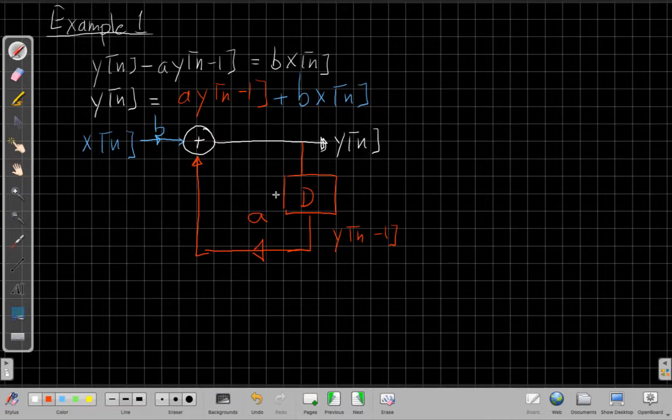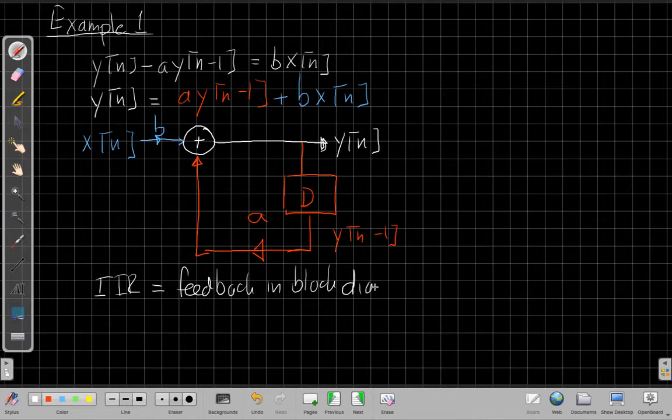Another good thing to point out about this figure, as we saw earlier in the example video, this is a recursive difference equation. So it leads to what we call an infinite impulse response. And this figure starts to show us why. It turns out that infinite impulse response is deeply connected, having an infinite impulse response is deeply connected to having feedback in the block diagram.